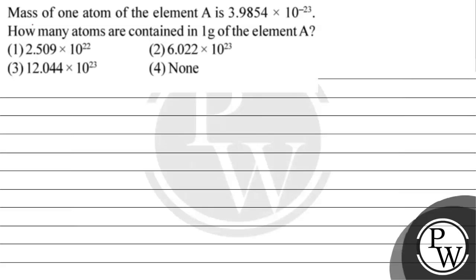Let's read this question. The question says: mass of one atom of element A is 3.9854 × 10⁻²³ grams. How many atoms are contained in one gram of element A? Option 1: 2.509 × 10²². Option 2: 6.022 × 10²³. Option 3: 12.044 × 10²³. Option 4: None.